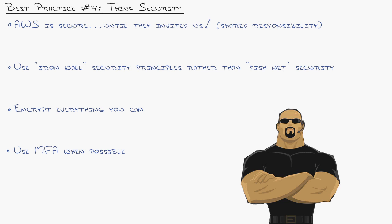Next up, security. AWS is secure or was secure until they invited us. They've passed just about every major security certification that exists. However, it is a shared responsibility model, which means they don't get into our operating systems. They allow us to maintain our firewall. So we need to make sure that we adhere to best security principles using ironwall security, meaning open small little individual ports in your firewall instead of fishnet where everything is open except a few big things.